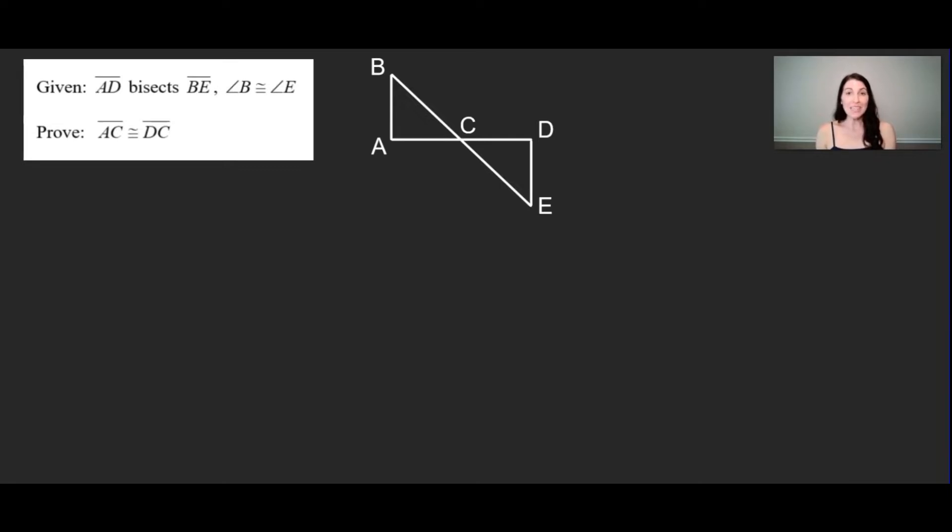So the first thing I'm going to do is look at the givens and for the first given I see that segment AD bisects segment BE. Let's think about how we would mark that in the diagram. So segment AD comes through and bisects BE. So it's BE that's being bisected which means it splits BE into two congruent segments.